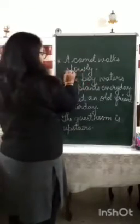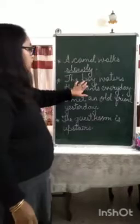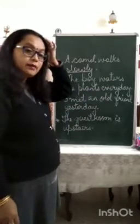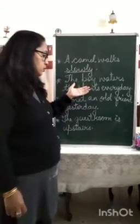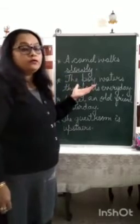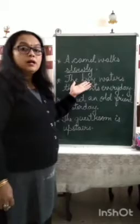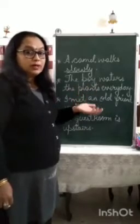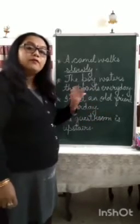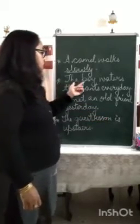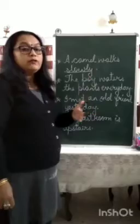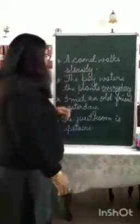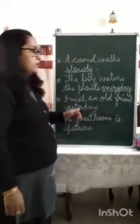Next: the boy waters the plants every day. It is telling you the frequency — how often does the boy water the plants? Does he water the plants every day, once a week, twice a week, or every alternate day? Here it is saying the boy waters the plants every day, telling you the frequency of how often he does it.